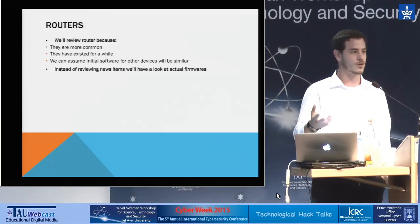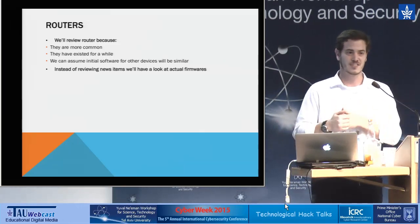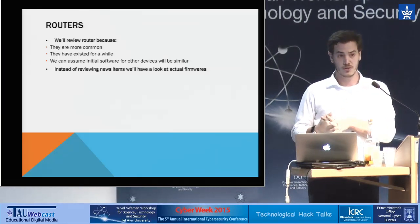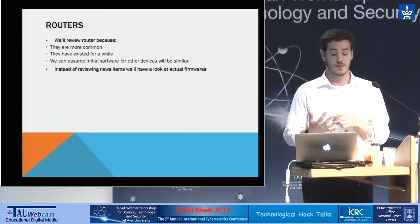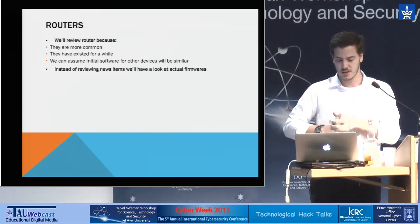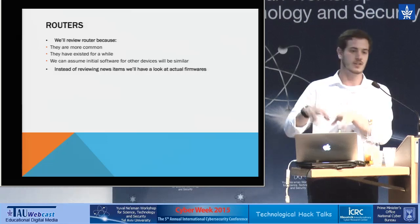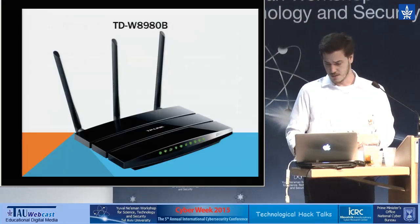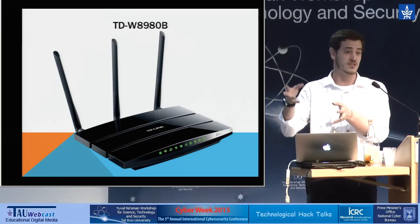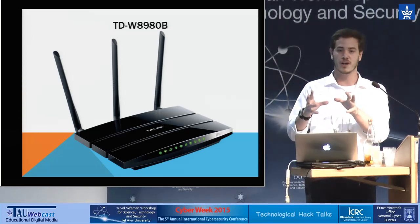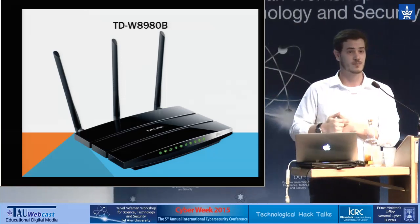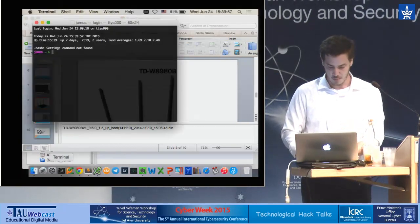Instead of looking at regular smart items, we'll use more mature technology: routers. They're basically the same as all IoT devices — little hardware pieces with some sort of Linux running on them. We chose routers because they're common, mature, manufactured by big companies, and found almost everywhere. We're going to take an actual firmware and start playing with it. We chose this one because when we downloaded two firmwares, this was the one with a huge bug findable in five minutes.